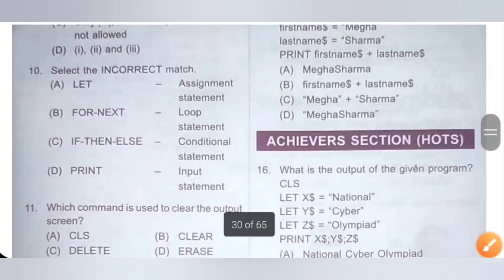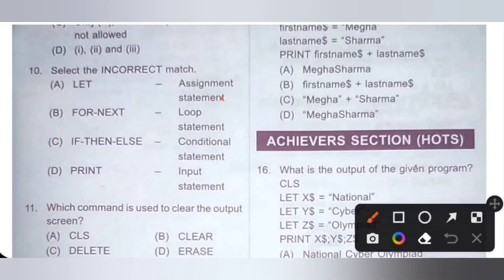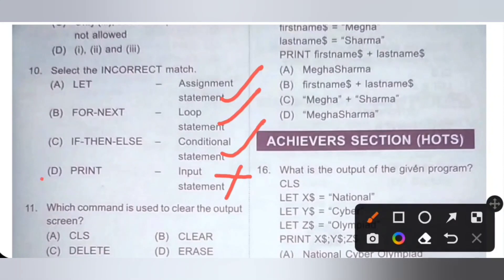Tenth question: select the incorrect match. Option A: LET — assignment statement, correct. Option B: FOR-NEXT — loop statement, correct. Option C: IF-THEN-ELSE — conditional statement, correct. Option D: PRINT — input statement, incorrect, because PRINT is an output statement. So the incorrect match is option D, which is the correct answer.